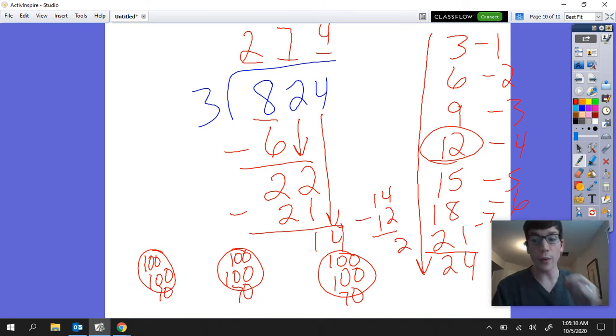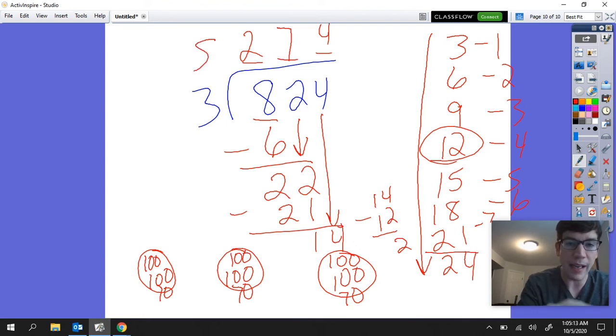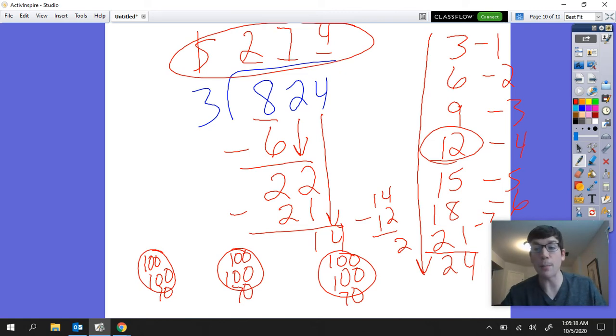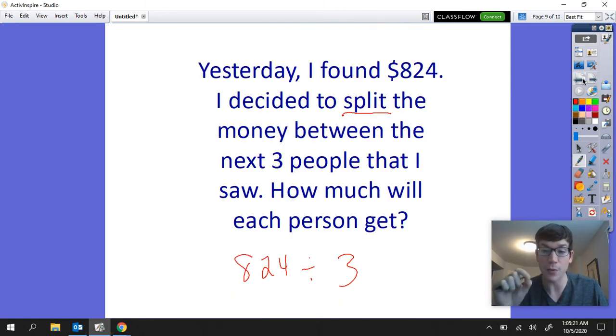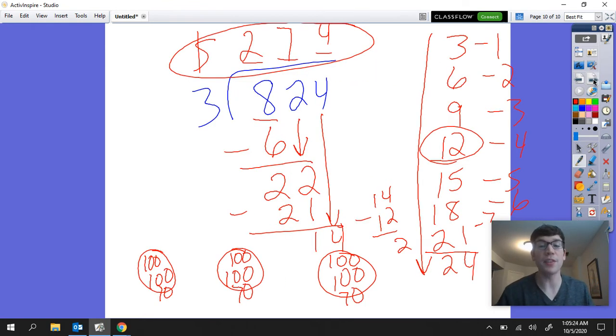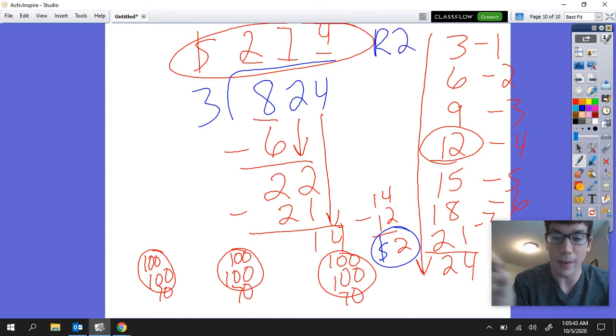Now the really important thing here is that you're going to notice that I have an answer of 274. Now that means that each person, if we remember back to our problem, it said how much will each person get? We know that each person is going to be able to get $274. But we really got to think, and this is going to happen a lot, about what to do with this two left over. It isn't just two, but rather two dollars - two dollars left over. This we call our remainder. A lot of times you'll see it written like this: remainder of two. We always have to realize what is the remainder representing. In this case, it's representing two dollars.